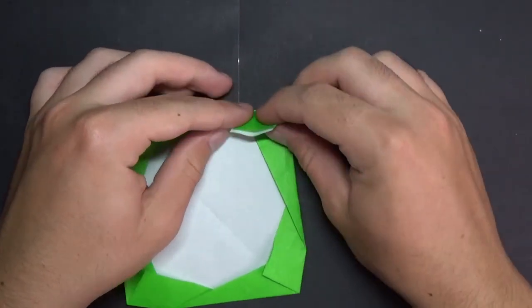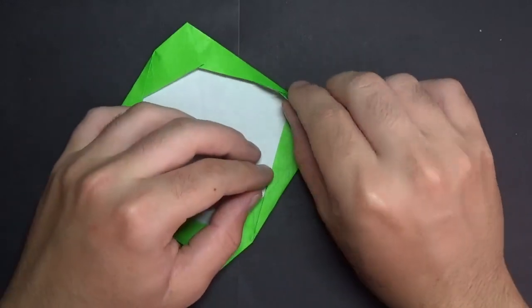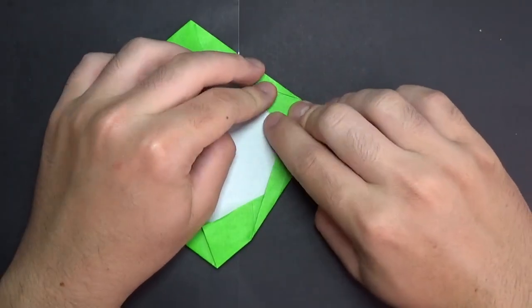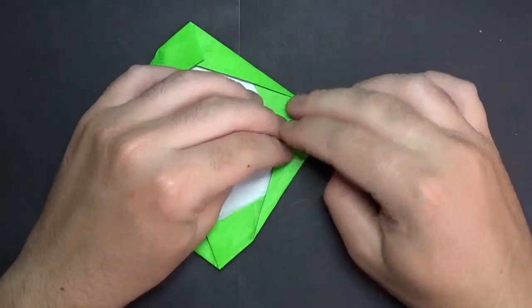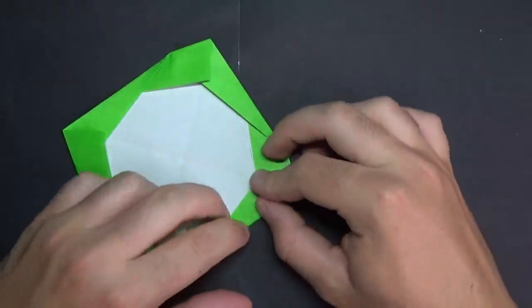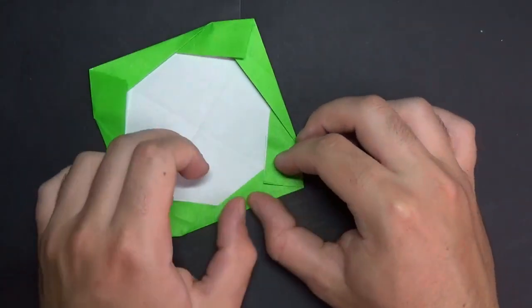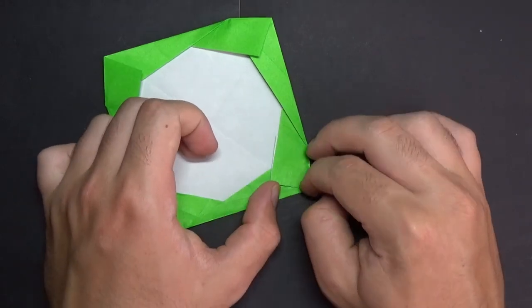Okay, and then now fold this down like this. Make sure you don't see any white sticking up. All right, and that's what it looks like. So that was kind of confusing and kind of tricky, so I hope you guys were able to do that.